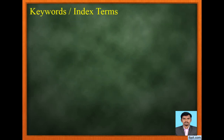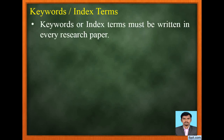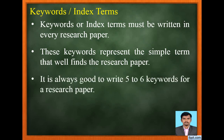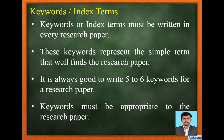Next, let us see keywords and index terms. Keywords or index terms must be written in every research paper. These keywords represent simple terms that help find the research paper. It is always good to write 5 to 6 keywords for every research paper, and they must be appropriate to the research paper.